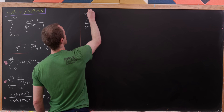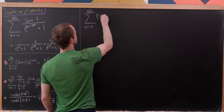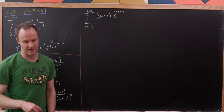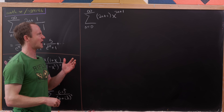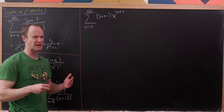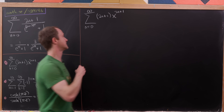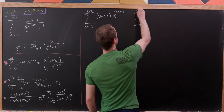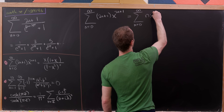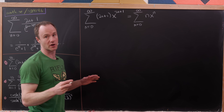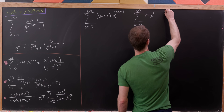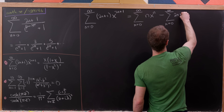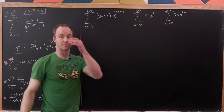We've got the sum as n goes from zero to infinity of (2n+1) times x^(2n+1). Notice that that's simply the odd terms of a more general series. I can write this as the sum as n goes from zero to infinity of n times x^n — that would be all of the terms — and then subtract off the even terms, which is the sum as n goes from zero to infinity of 2n times x^(2n).